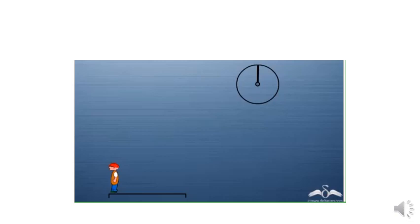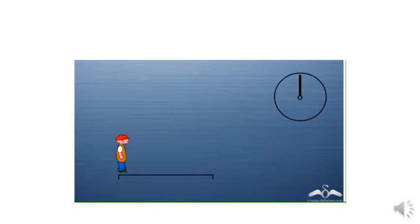What happens if the person is running at double the speed? Let's count the number of times he hits the boundaries in the same time — that is, in one minute.